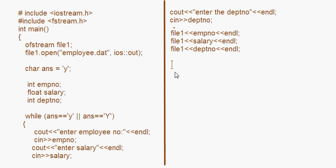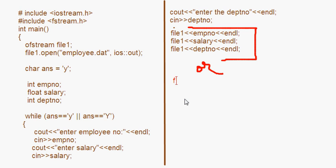If you want to write all the data on the same line instead of separate lines with endl, there is an alternative. You can write: file1 << empNumber << " " << salary << " " << departmentNumber << endl.